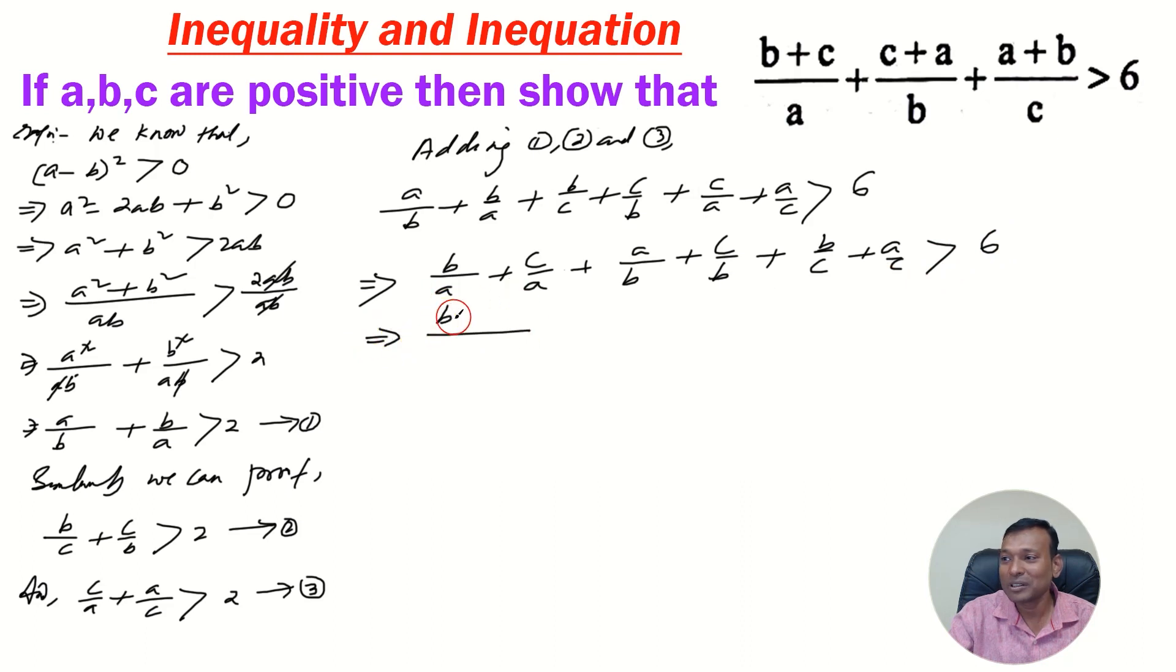Here, a is common: b plus c by a. Here, b is common: a plus c by b. Here, c is common: b plus a by c. We arrange these as b plus c by a, c plus a by b, and a plus b by c. Therefore, b plus c by a plus c plus a by b plus a plus b by c is greater than 6.